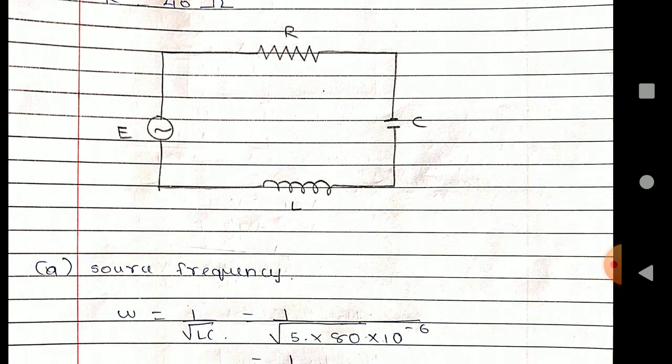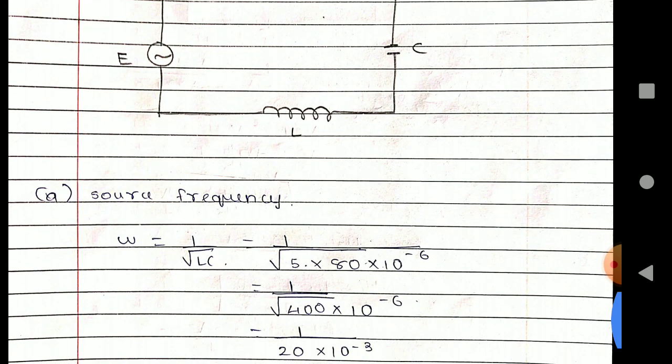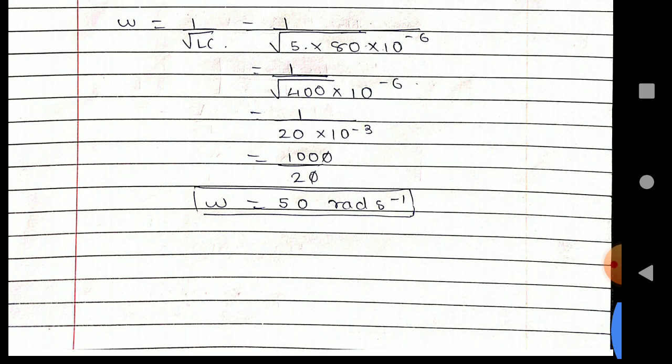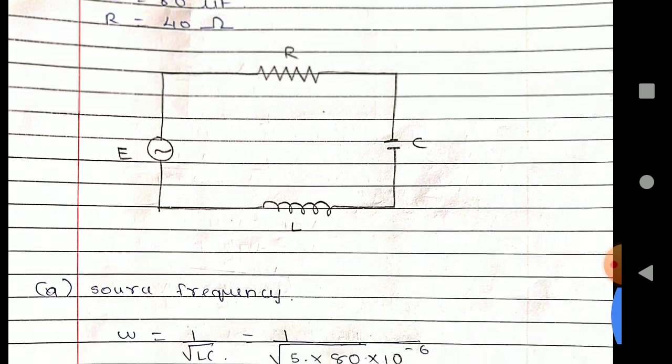Source frequency, diagram is given. Now ω equals 1 upon root LC. Applying the value, you get ω equals 50 radians per second. So this was the thing about the whole paper of physics.